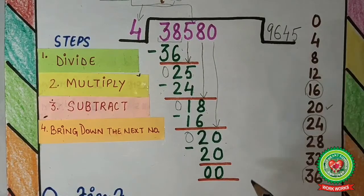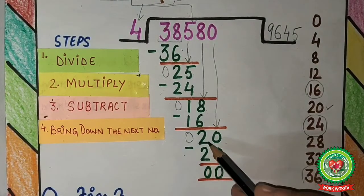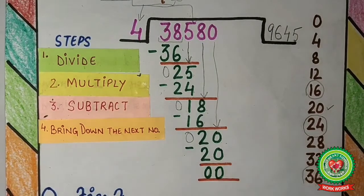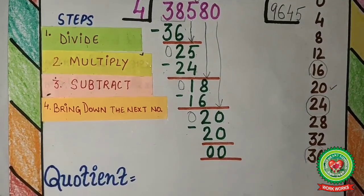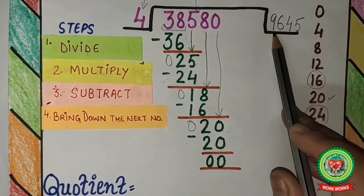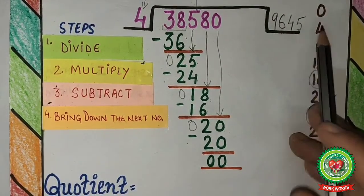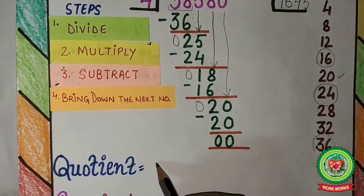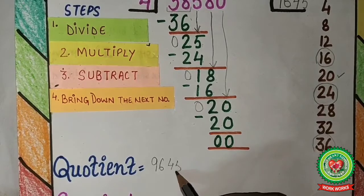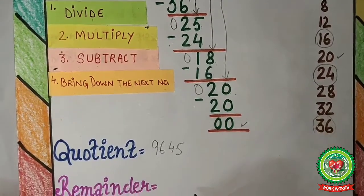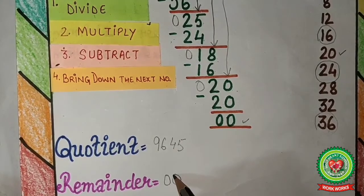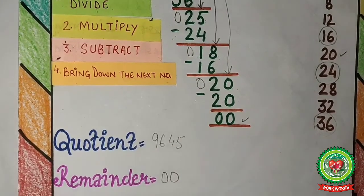Next step is subtract: 0 minus 0 is 0, and 2 minus 2 is 0. So the remainder is 0. The quotient is 9,645. So we write 9,645 as the quotient and the remainder is 0.